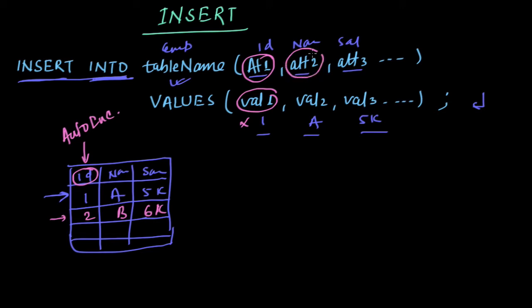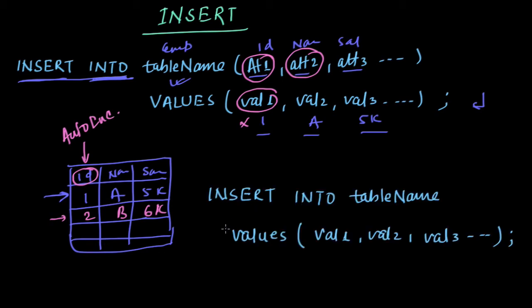Now providing column name always is not important, that is, this is optional and we can skip this. So we can directly write INSERT INTO table name, of course, and then VALUES. We are skipping this column name, this whole thing.